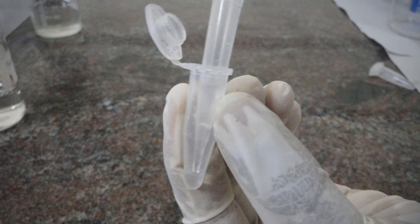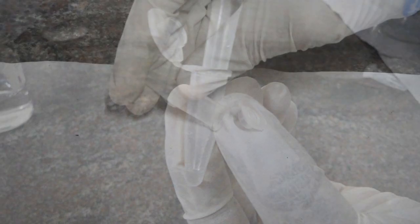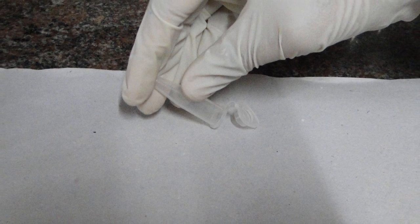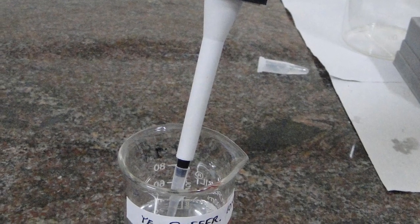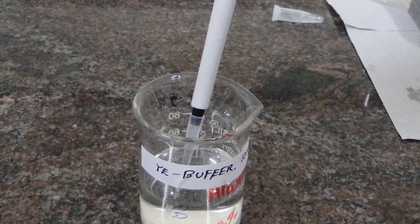Decant the ethanol or supernatant using the pipette. Keep the vial at room temperature for the ethanol to evaporate. Then dry the vial on the blotting paper. Once the vial is dried, add 50 to 100 microliters of TE buffer.